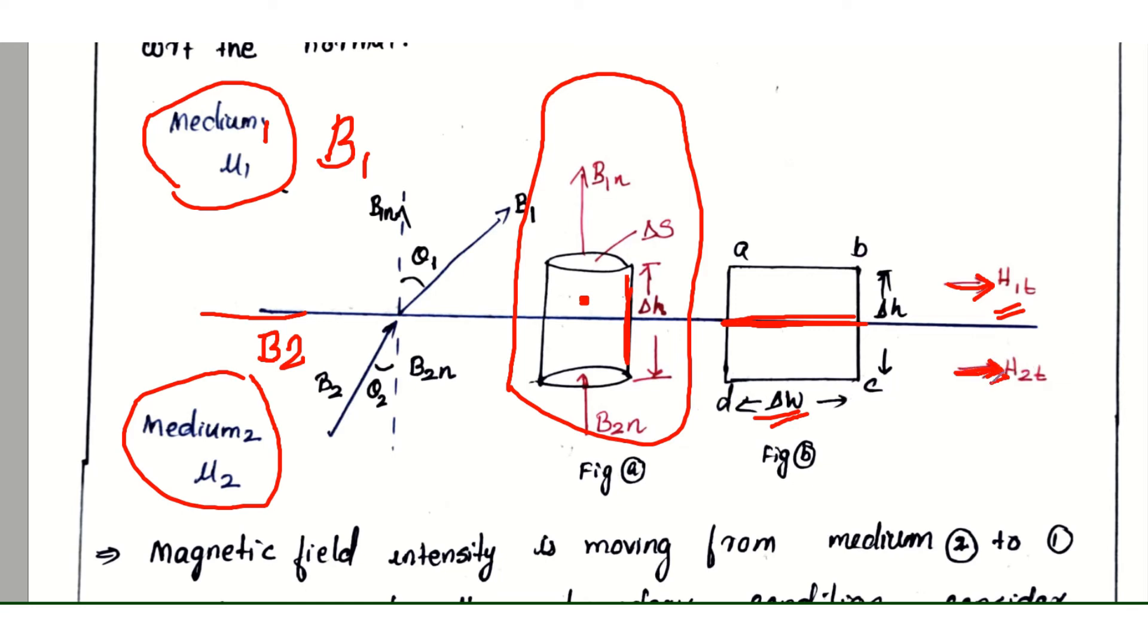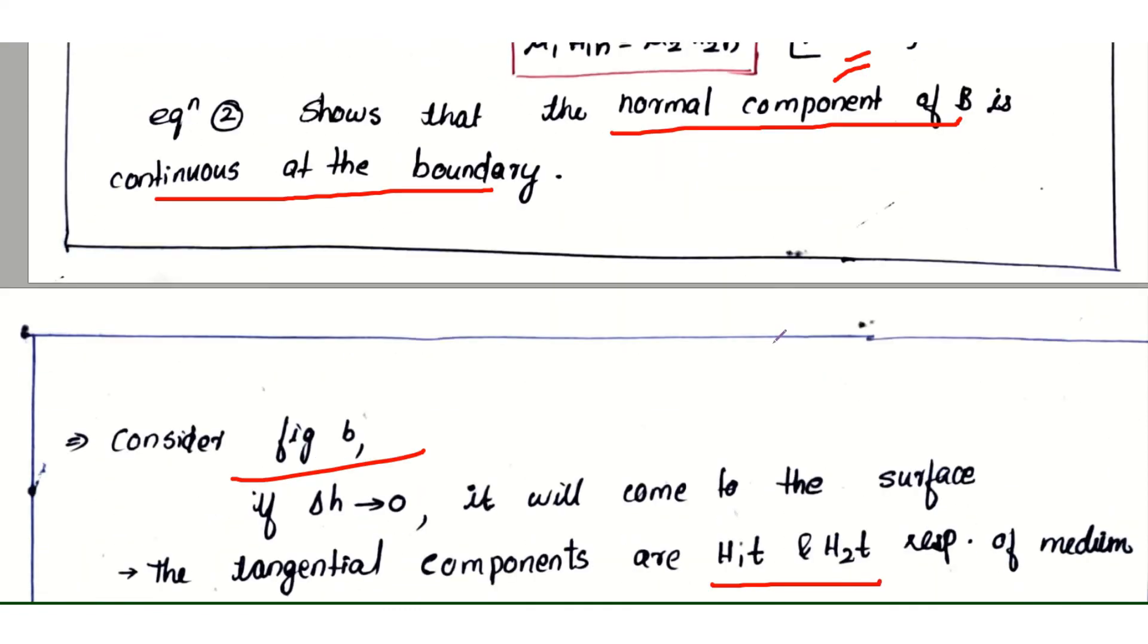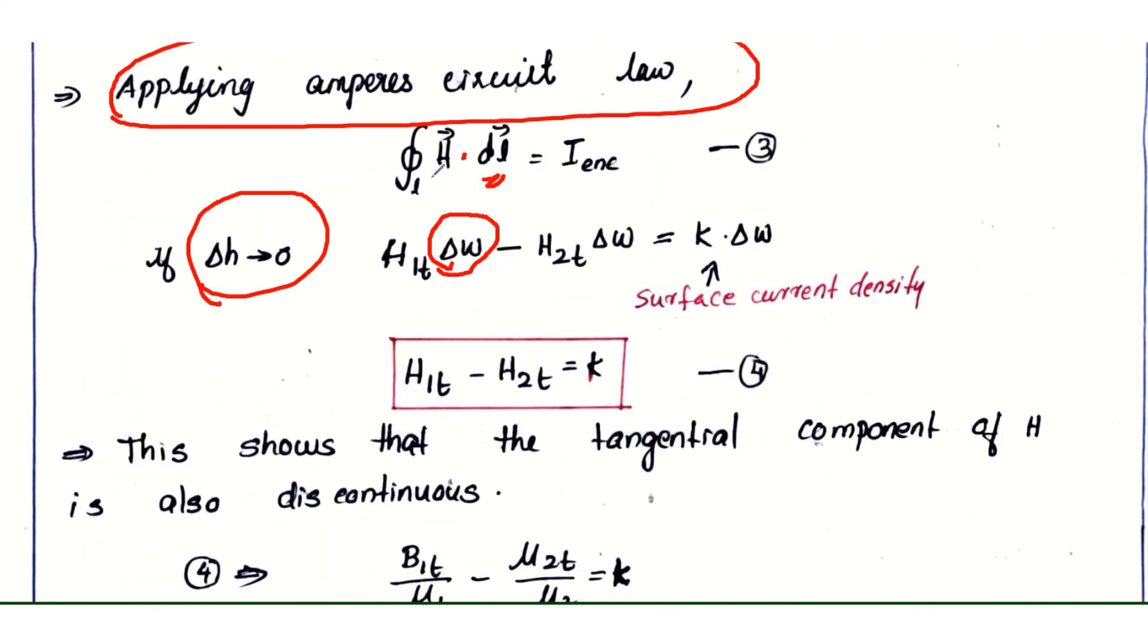The opposite direction is moving, so the answer is minus H₂ₜ. This gives H₁ₜΔw - H₂ₜΔw = current, which equals current density times area.